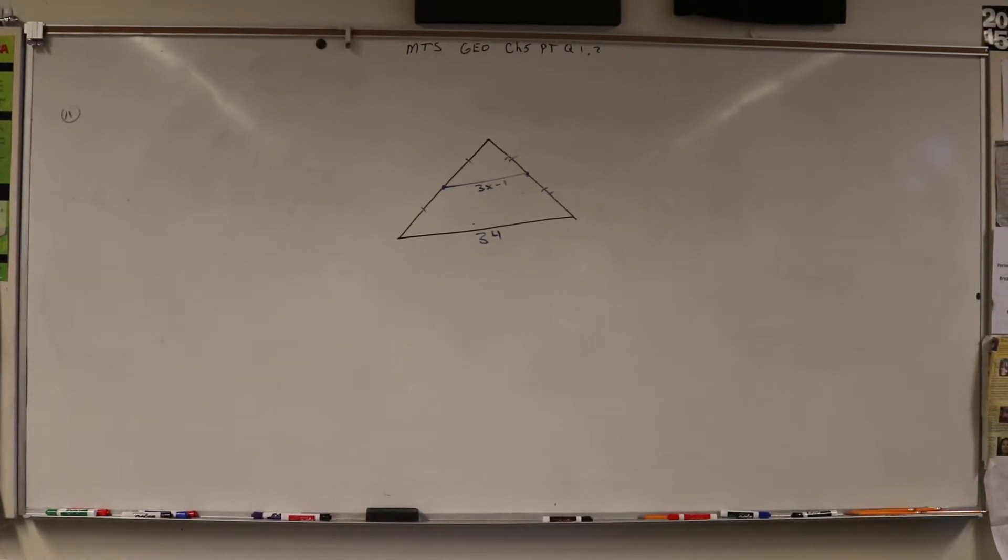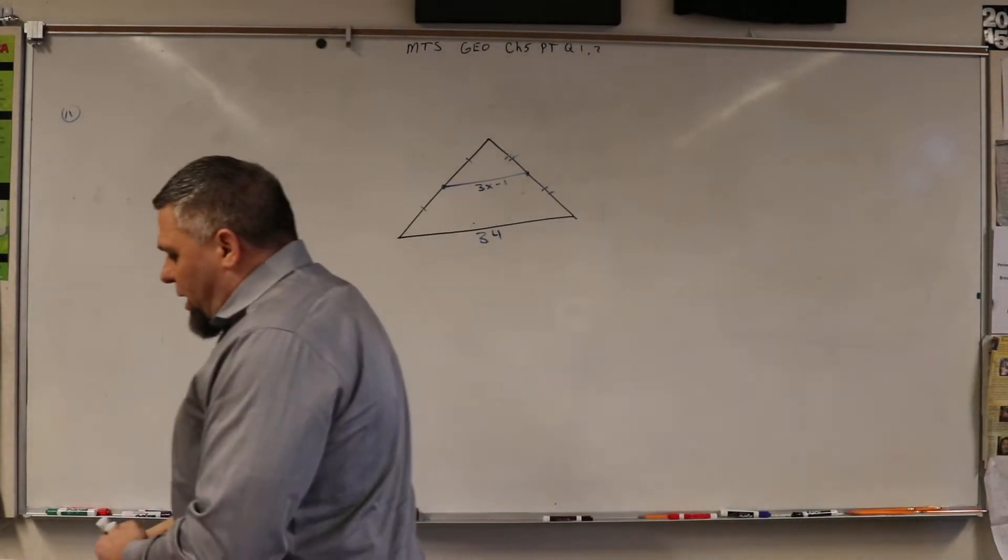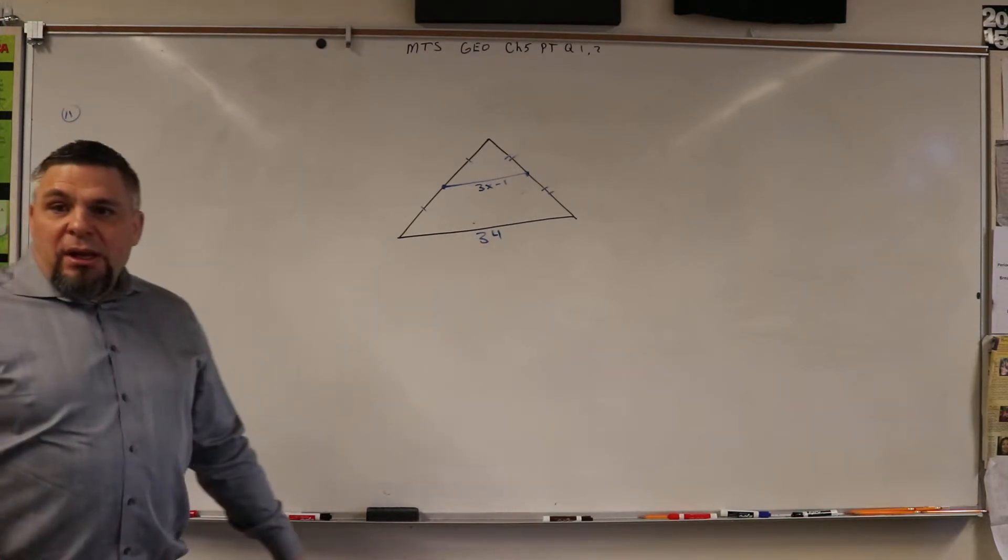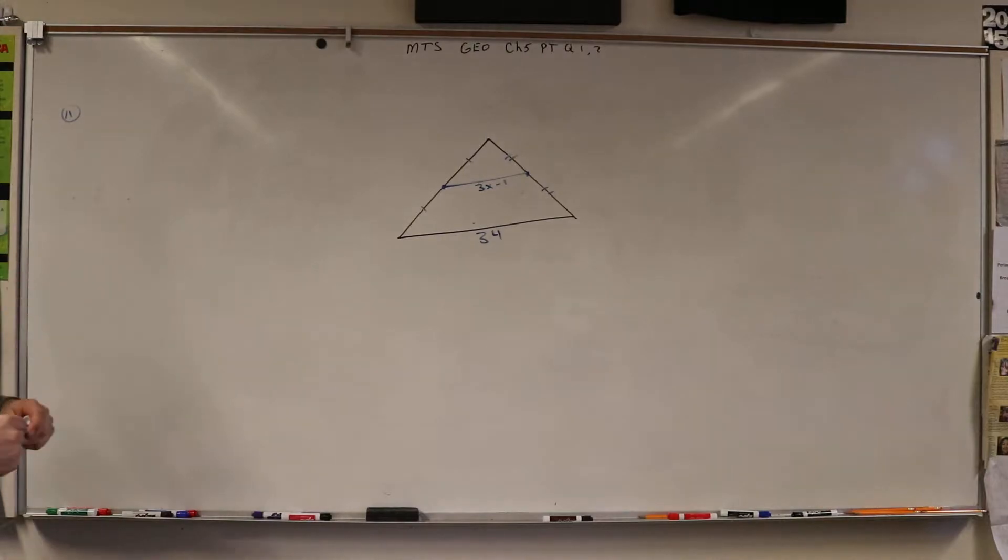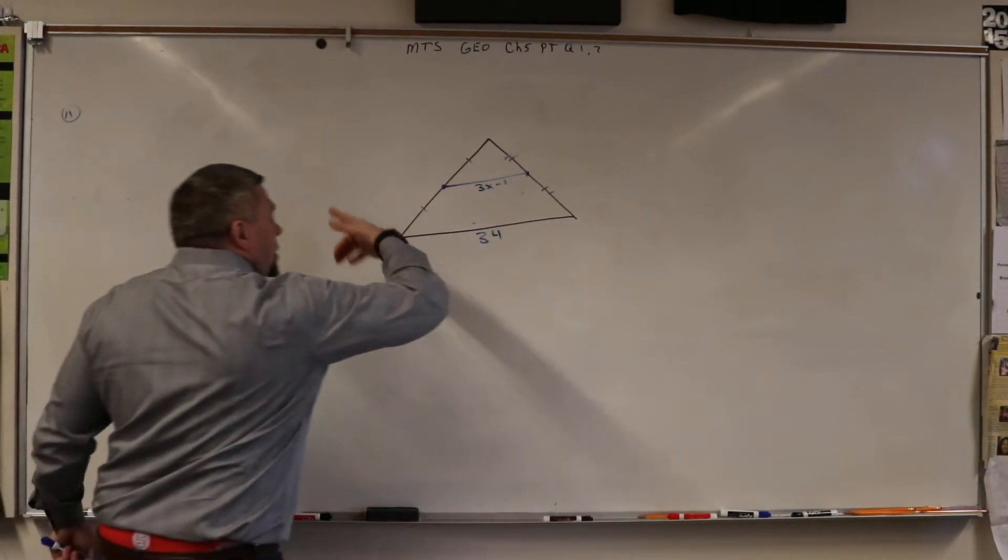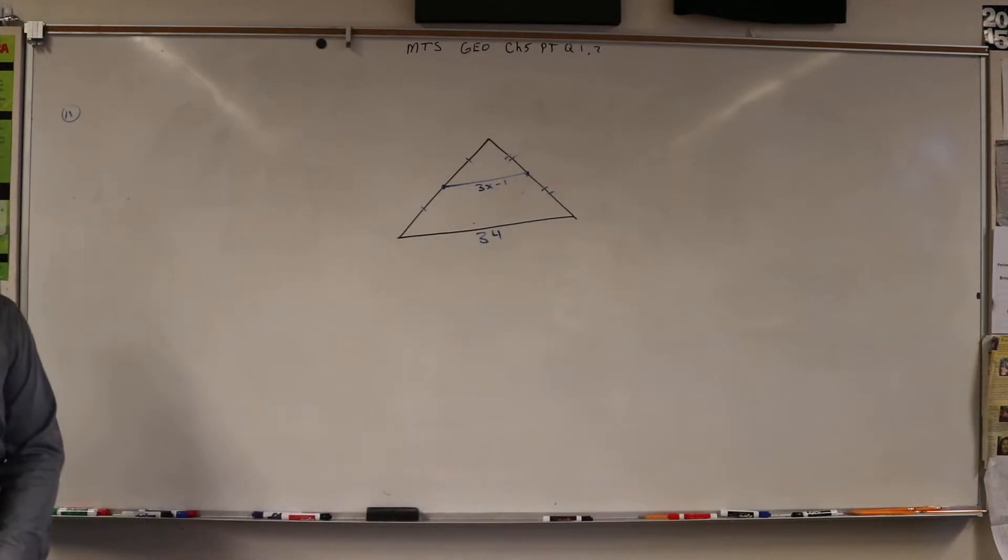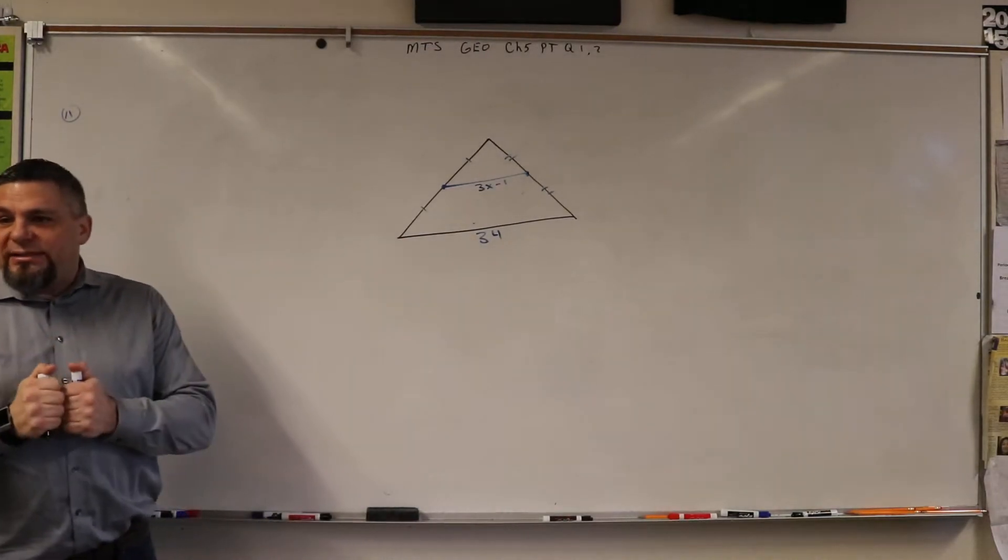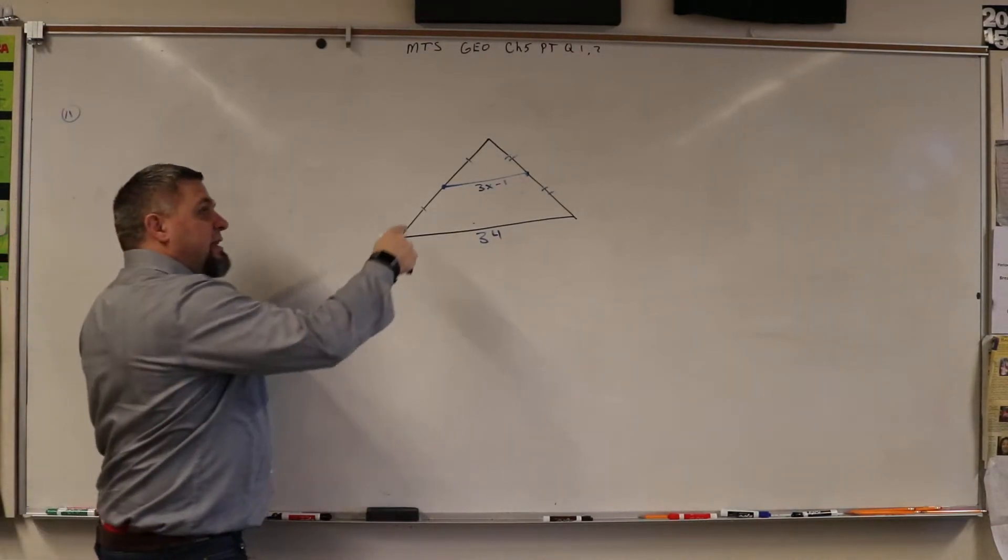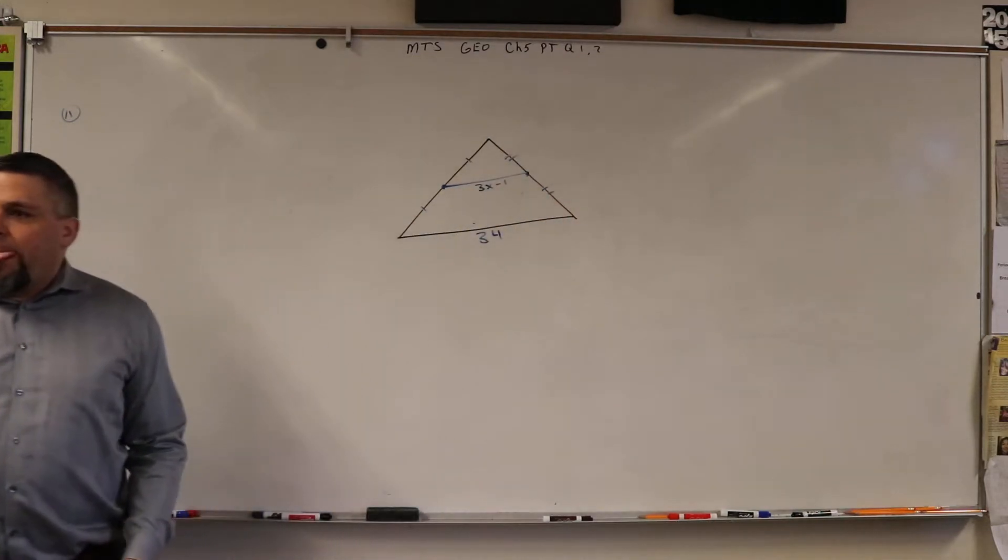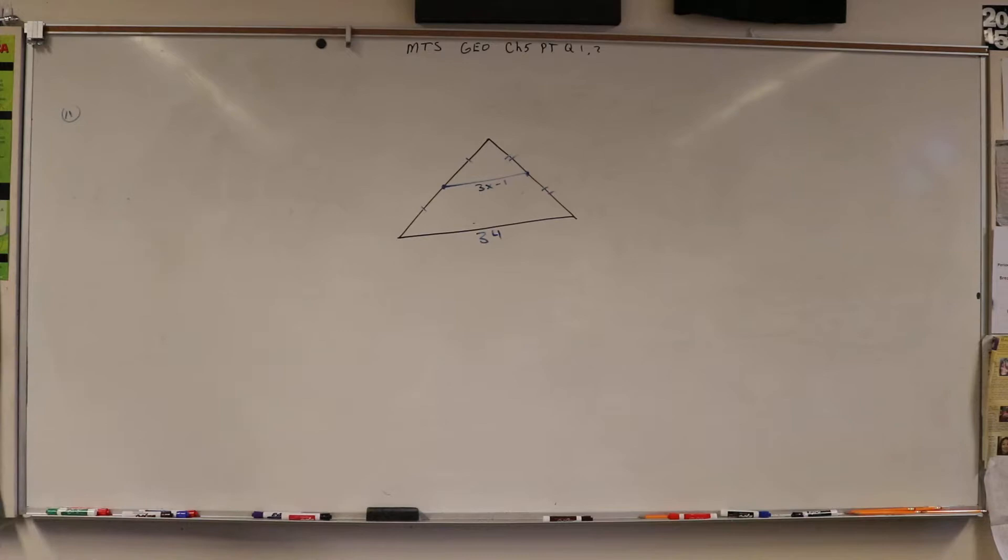Alright, so two column proofs on this is key. The one thing I need to know right off the bat is what's going on with this structure. And what I notice is it's a bisector, right? It's cutting this in half and it's cutting this side in half.